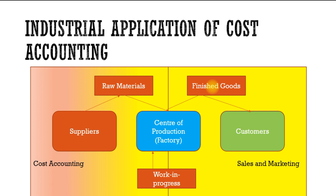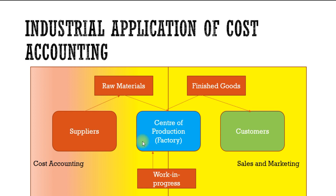Next we'll look at the industrial application of cost accounting. There are three main entities involved in manufacturing. The first is the center of production or factory where goods are produced. The second is the suppliers, from whom raw materials are collected by the factory to make goods. The third is the customers, who buy the finished goods from the factory.